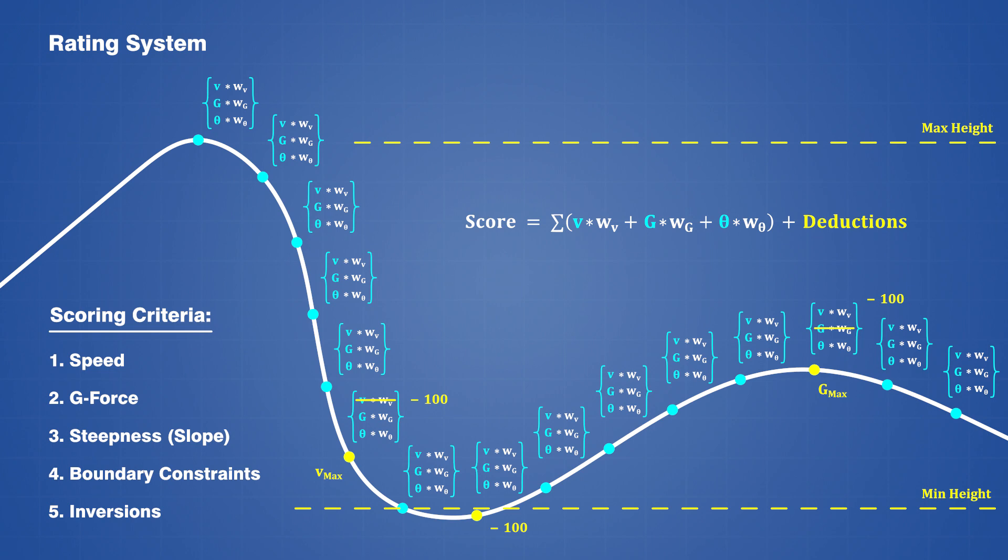Once all of the numbers are added together, the final result is a single score that represents the overall quality of the design. The process itself is fairly straightforward here, but the tricky part is fine-tuning the weights and deductions so that the rating system is well-balanced.